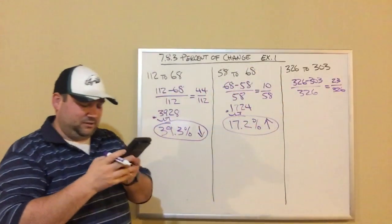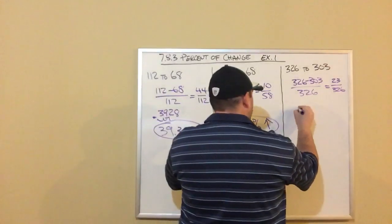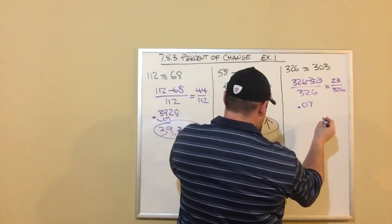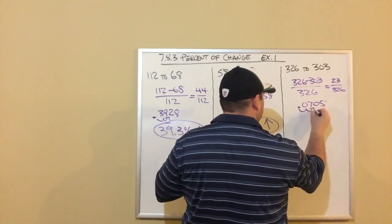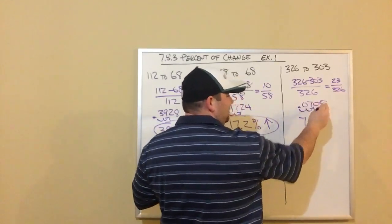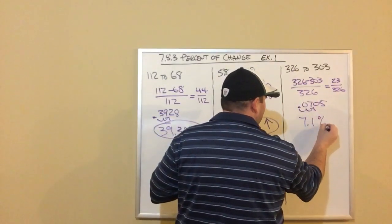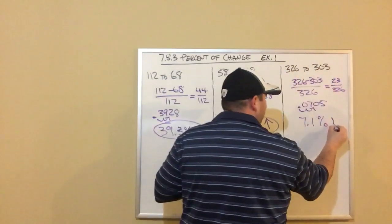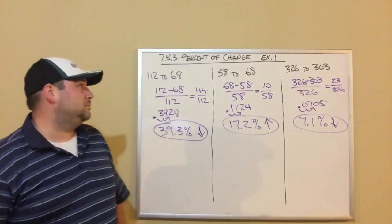I do that division in my calculator. 23 divided by 326. I get 0.07. You can't see my calculator. 0.5. Move my decimal two to the right. Round to the nearest tenth. That 7 point, I look at the 0. The next digit's a 5. Tells me to round the 0 up to 1. So 7.1%. And this is a decrease because we started with 326. We went down to 303. So a decrease. So a 7.1% decrease.